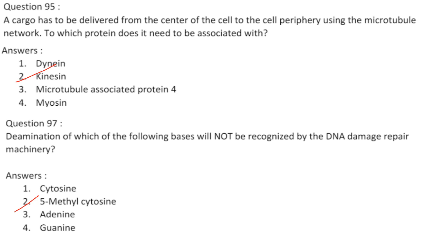Deamination of which base will not be recognized by the DNA damage repair machinery? Spontaneous deamination of cytosine forms uracil, which is recognized and removed by DNA repair enzymes. Deamination of 5-methylcytosine forms thymine, which is not recognized by DNA repair enzymes and consequently can result in a C to T mutation. Answer is option 2, 5-methylcytosine.